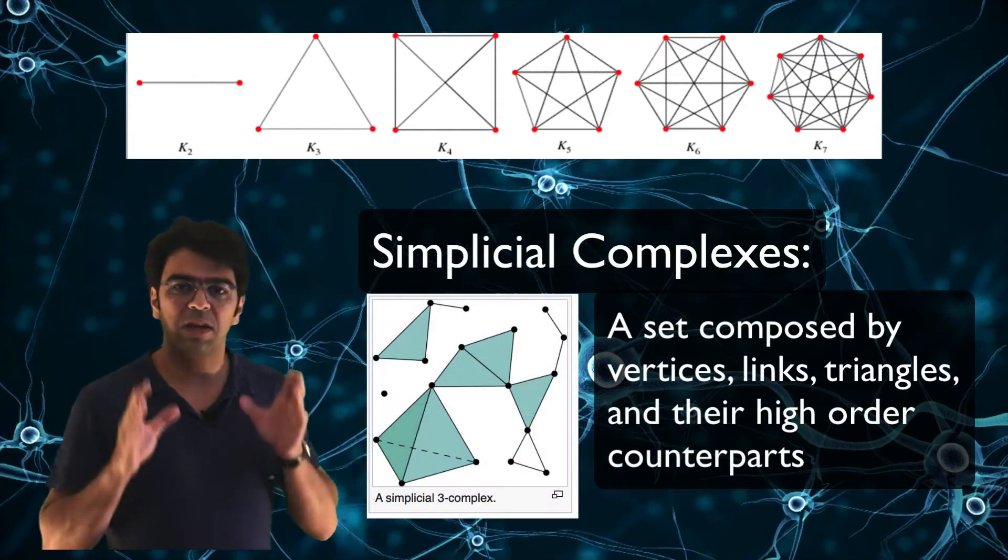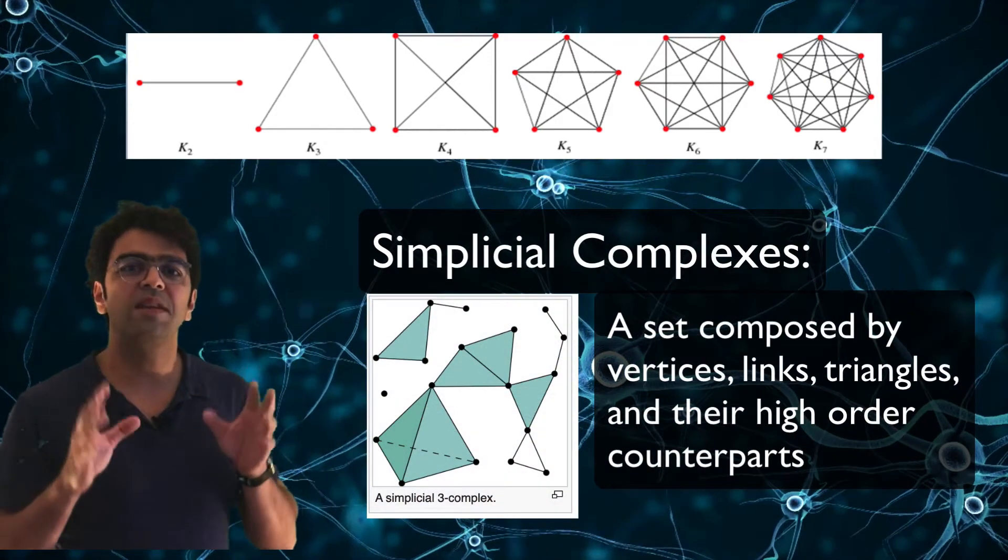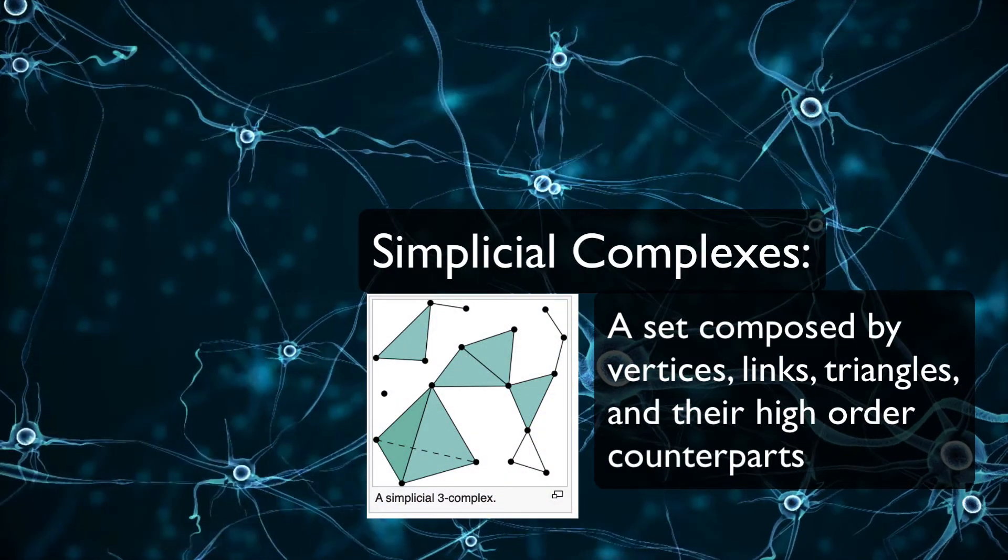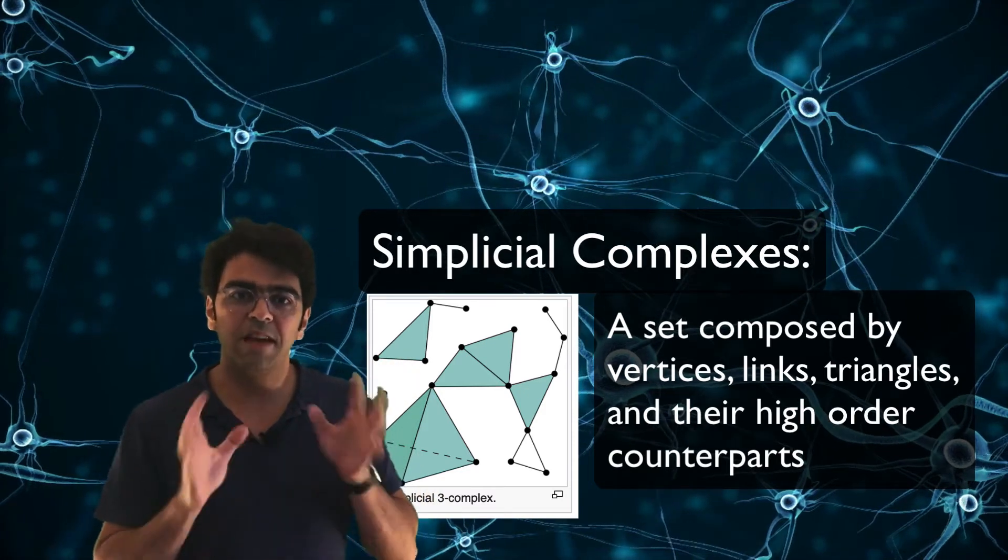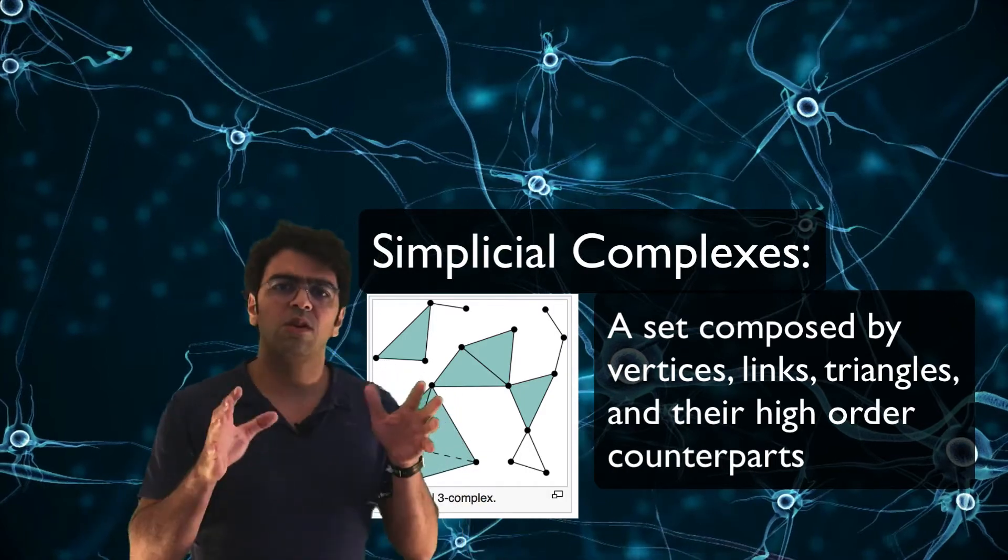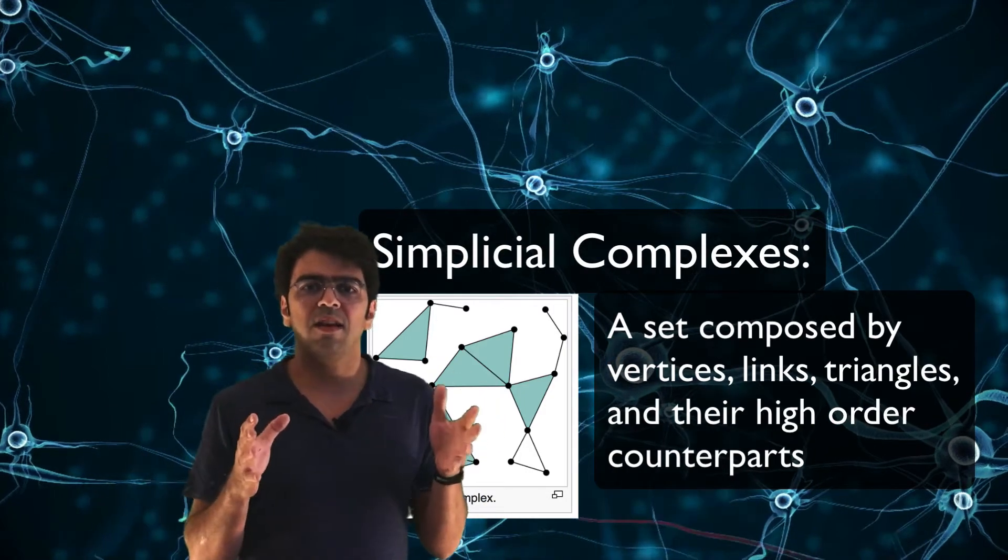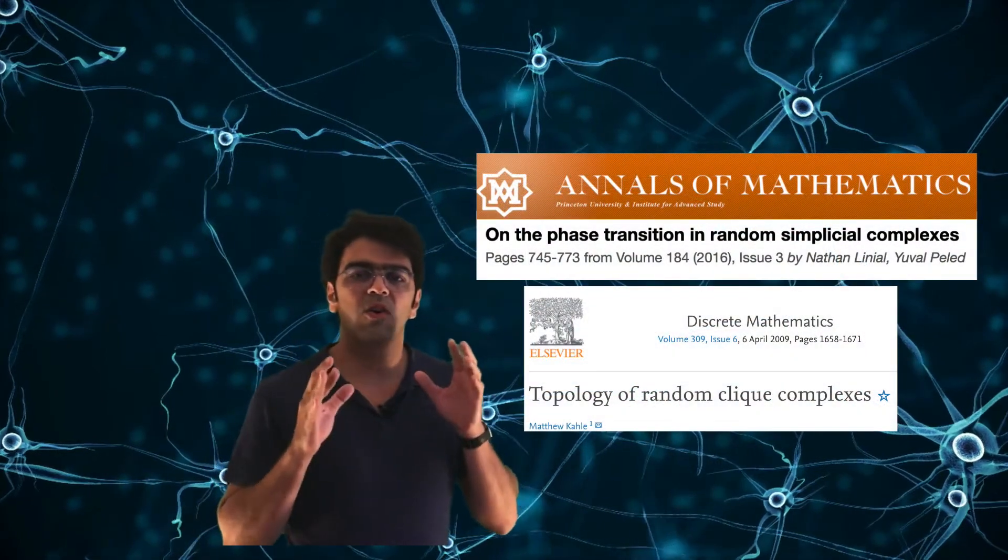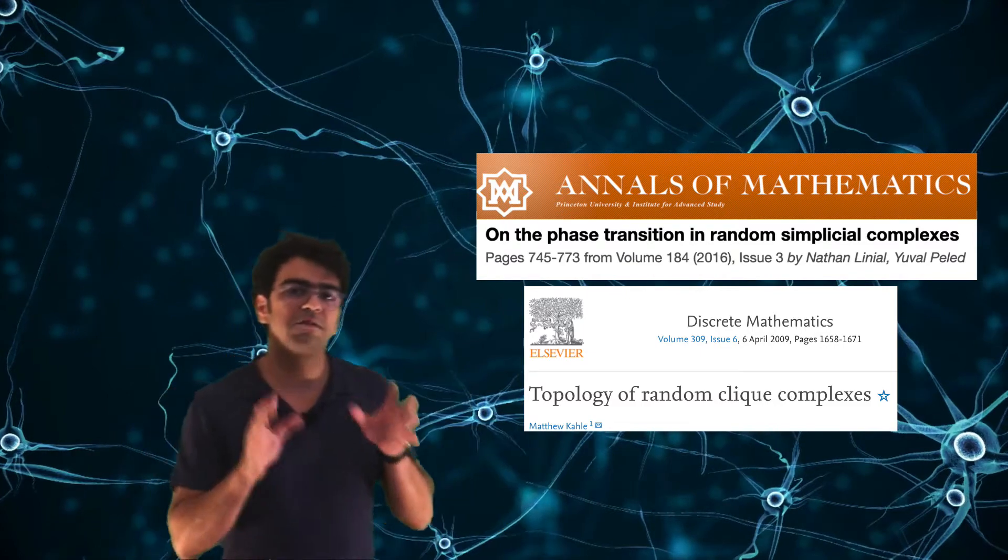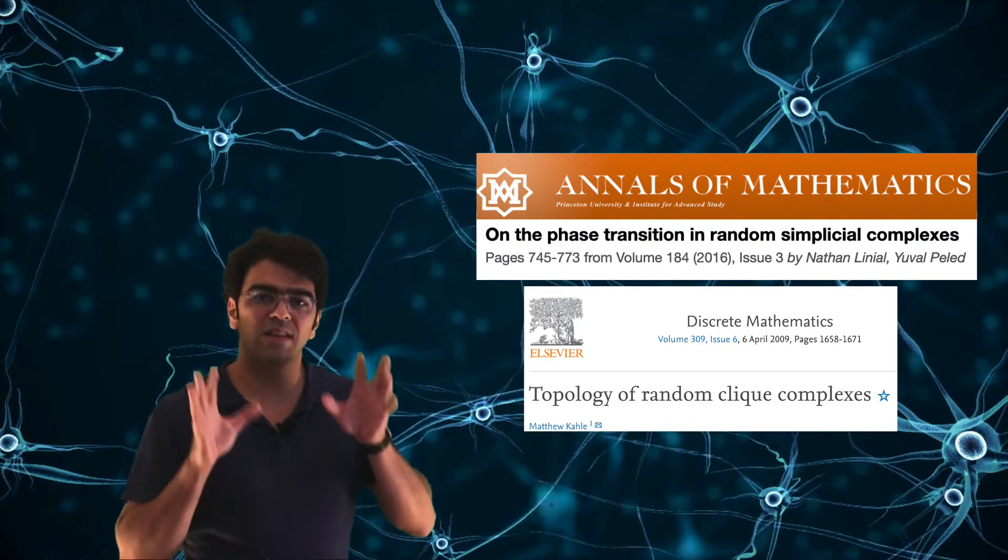That means that we can also associate a simplicial complex to a network. With all this idea together, we may also realize that the phase transition that was previously studied by Erdős and Rényi could also be studied in the context of simplicial complexes. It's very surprising that this generalization was only done a few years ago. This field is called nowadays stochastic topology.